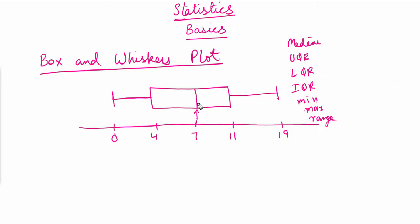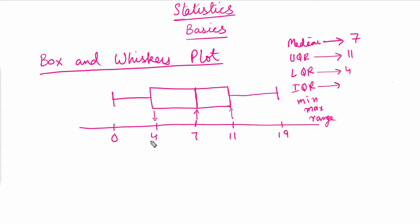The median from this box and whisker plot is the middle line, so the median is 7. The upper quartile range is where the box ends — that is 11. The lower quartile range is 4. The interquartile range is 11 minus 4, which equals 7. The minimum value is 0 and the maximum value is 19. The range is 19 minus 0, which equals 19.